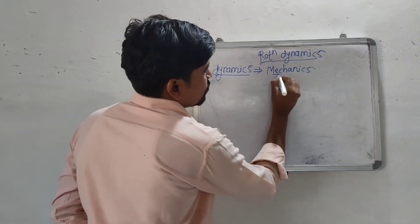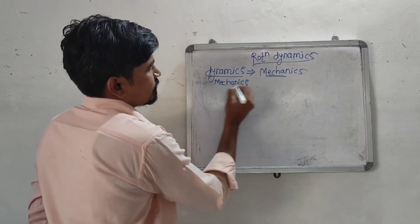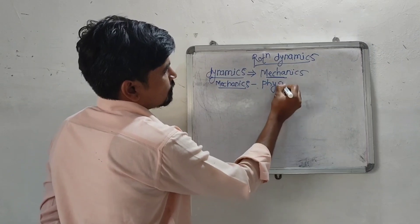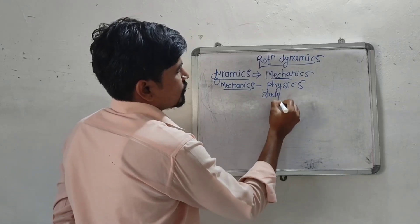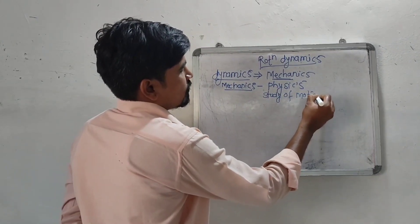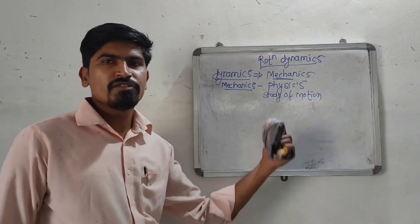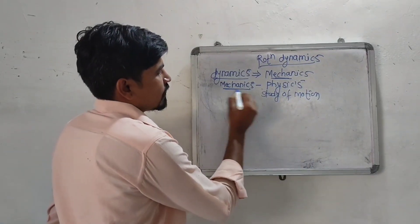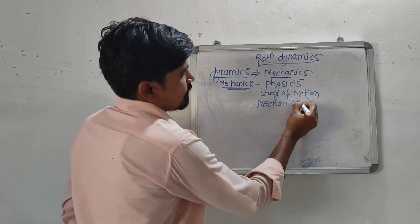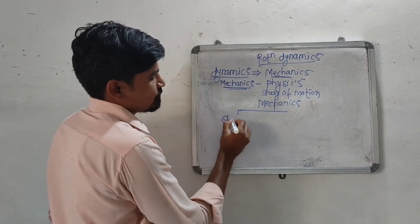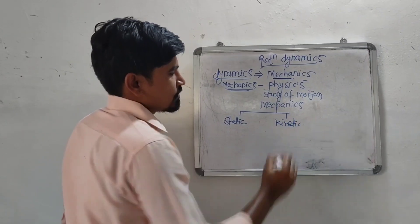Now let us discuss about the word mechanics. Mechanics is a branch of physics that deals with the study of motion. Dynamic is a branch of mechanics. Now let us study about mechanics — in how many branches mechanics can be studied. Mechanics is classified into two main categories: the first one is static and the second one is kinetic.